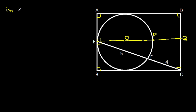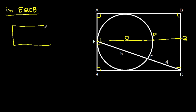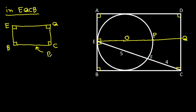Then in quadrilateral EQCB — that is E, Q, C, B — these three angles are 90 degrees. So this angle will also be 90 degrees. That means EQCB will be a rectangle, and this angle is 90 degrees.